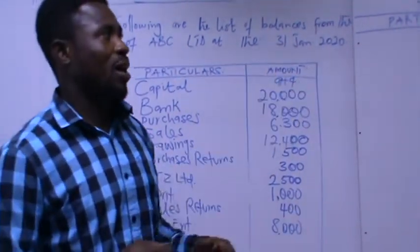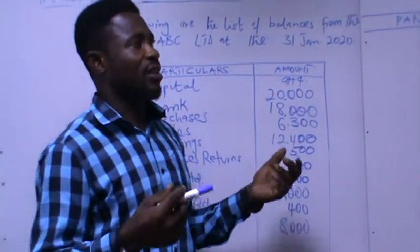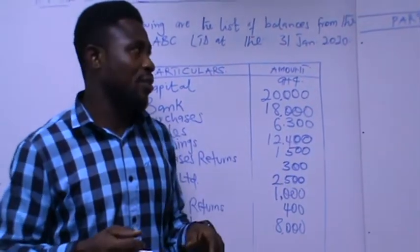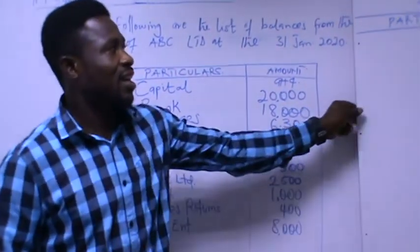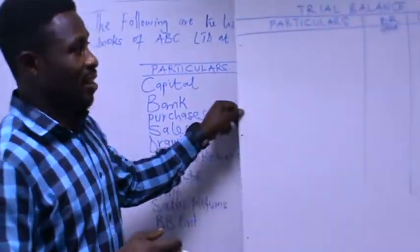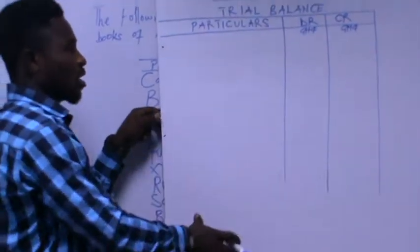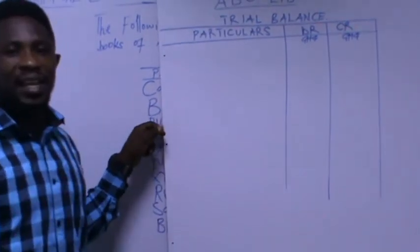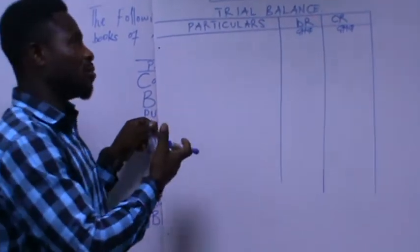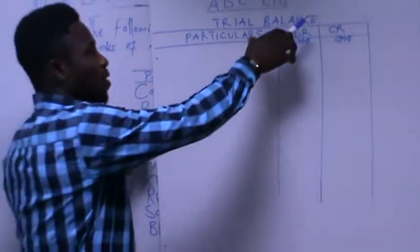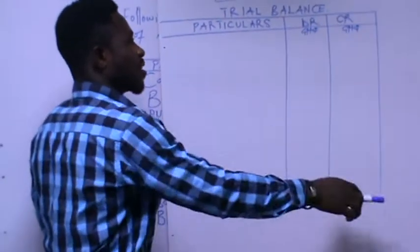We prepare the trial balance to check the arithmetic accuracy and it has three divisions: the particulars column, which contains the names of the accounts; the debit side; and the credit side.